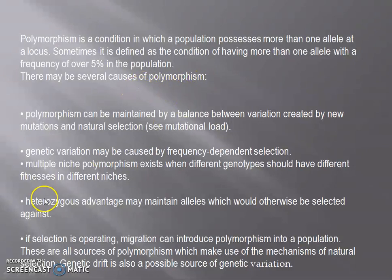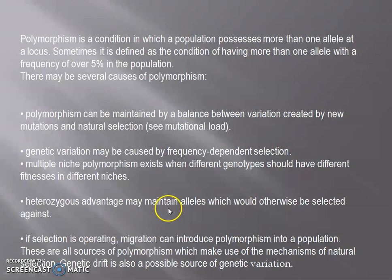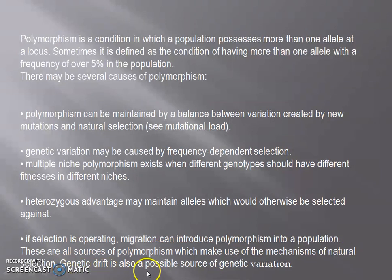There may be several causes of polymorphism. It can be maintained by a balance between variation created by new mutation and natural selection. Genetic variation may be caused by frequency-dependent selection. Multiple niche polymorphism exists when different genotypes have different fitnesses in different niches. Heterozygous advantage may maintain alleles which would otherwise be selected against. If selection is operating, migration can also introduce polymorphism into a population. Genetic drift is also a possible source of genetic variation.